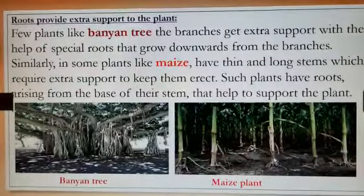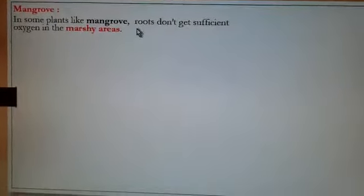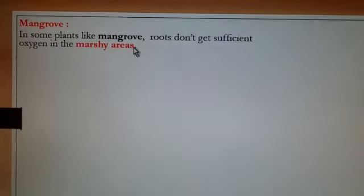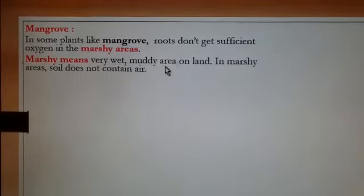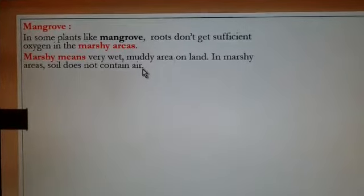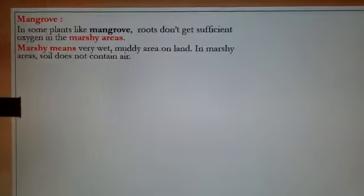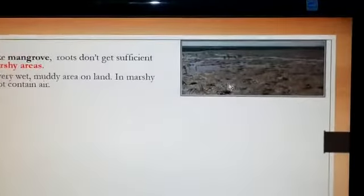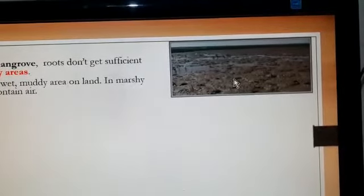Another variety is mangrove plants, which grow in marshy areas. In some plants like mangrove, roots do not get sufficient oxygen in marshy areas. Marshy means a very wet, muddy area on land. Here you can see a video showing very wet muddy soil — this is called marshy soil, where the soil does not contain air.